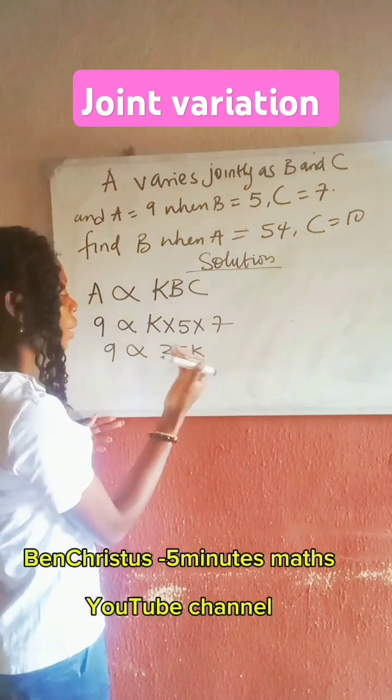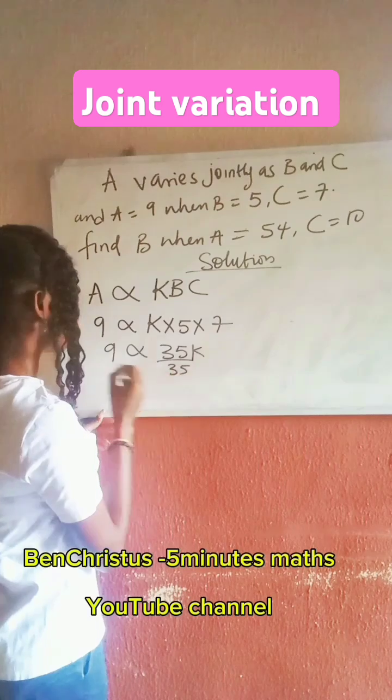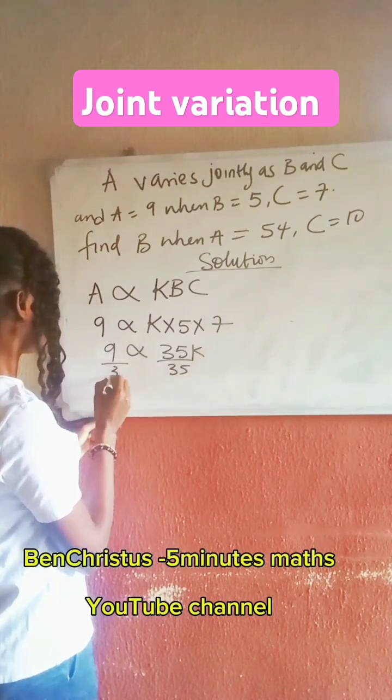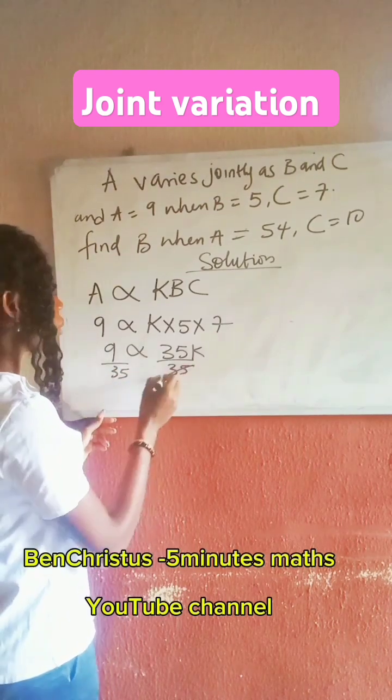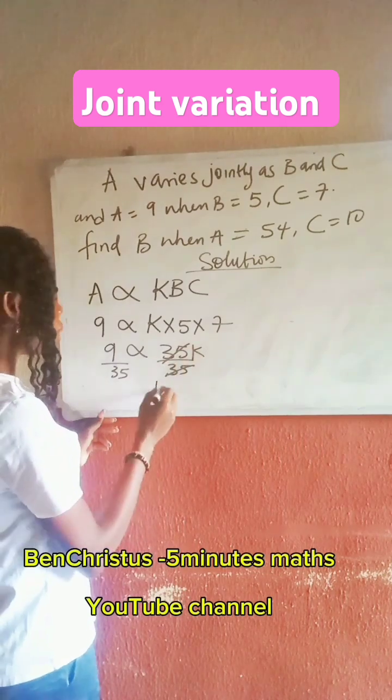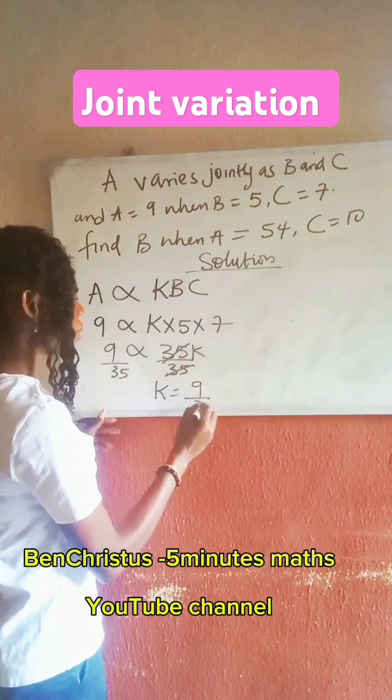So now for us to get K, we divide both sides by 35. This will cancel out. So our K is 9 over 35.